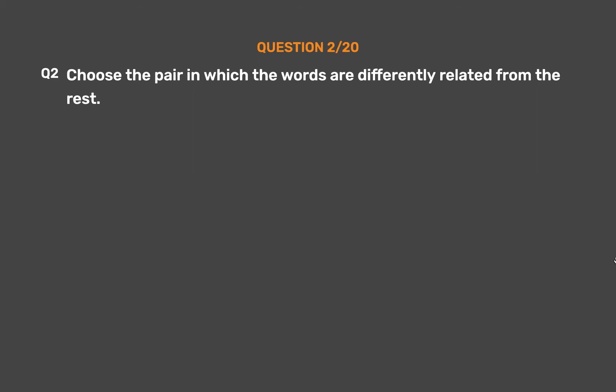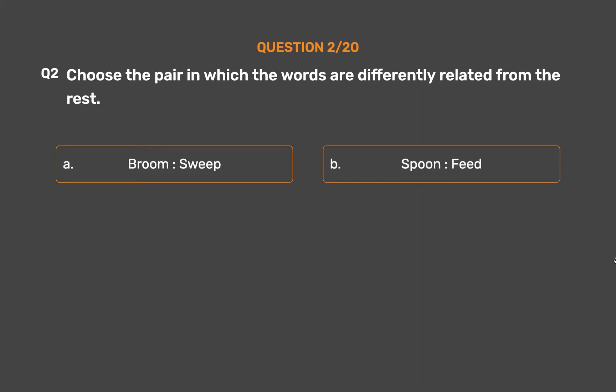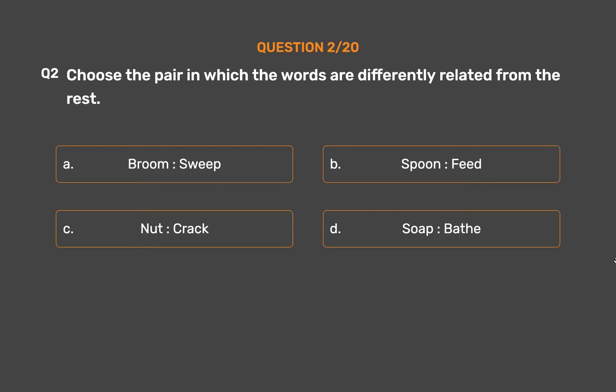Question number 2. Choose the pair in which the words are differently related from the rest. Option A: Broom, Sweep. Option B: Spoon, Feed. Option C: Nut, Crack. Option D: Soap, Bathe.